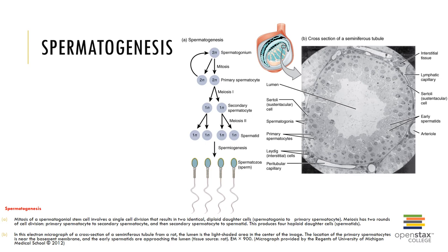Spermatogenesis is sperm formation and begins during puberty and continues throughout life. It occurs in the seminiferous tubules of the testes and generally takes nine weeks. It requires three steps: mitosis of the spermatogonia, followed by one of the daughter cells undergoing meiosis to form the gametes, and differentiation of immature male gametes into physically mature sperm, called spermiogenesis.